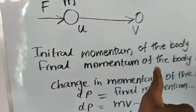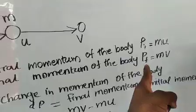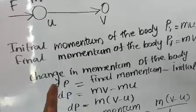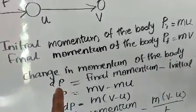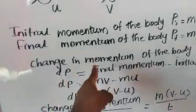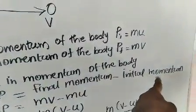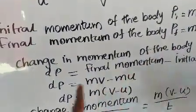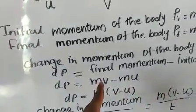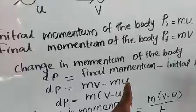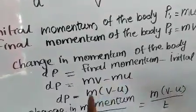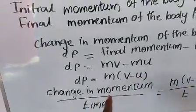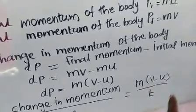Final momentum of the moving body, Pf, is equal to mass × final velocity, i.e., M × V. Now, find the change in momentum of the body, ΔP. Change in momentum equals final momentum minus initial momentum. Substituting: ΔP = MV − MU. Since M is common, taking it outside: ΔP = M(V − U). Therefore, change in momentum divided by time equals M(V − U) / T.